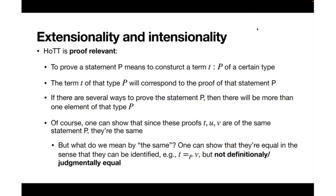If there are several ways to prove the proposition P, then there will be more than one element of the type P. If there are different elements of the type, we can say they are 'the same' in the sense that we can form an identity type.